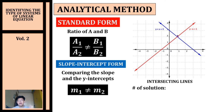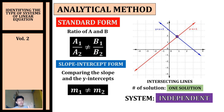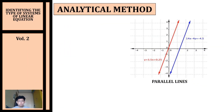We can now conclude that we will have an intersecting line. If we have an intersecting line, we can expect one solution, and the type of system will be an independent system.